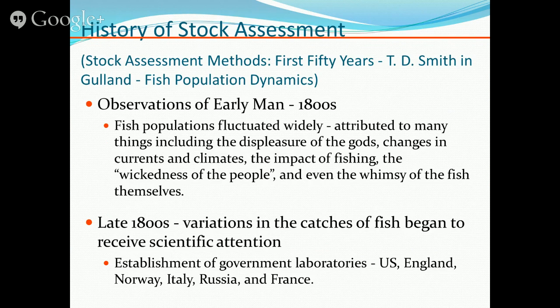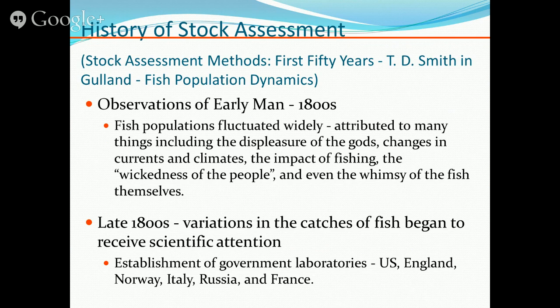For those interested in the history of stock assessments — before the 1800s, fish abundance was thought to be an act of gods or divine punishment. During the 19th century, variations in fish catches began receiving more scientific attention through the establishment of marine laboratories in the U.S. at Woods Hole, and in England, Norway, Italy, Russia, and France. They became interested in the science of fishing and maximizing catch-per-unit-effort.